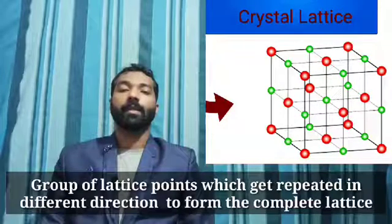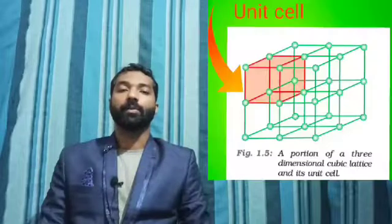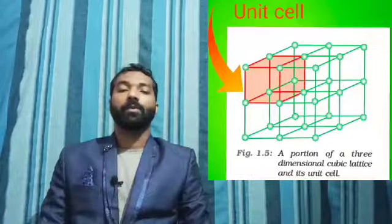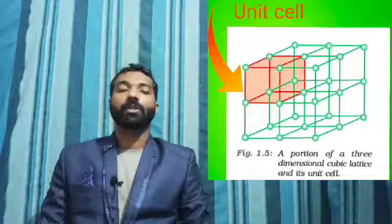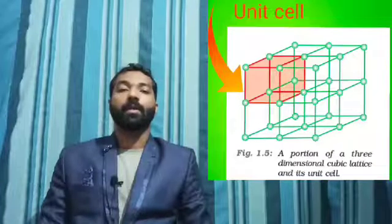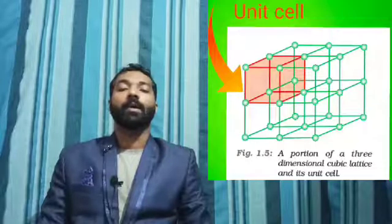Now let's look at the characteristics of the crystal lattice. The smallest repeating portion of the crystal lattice is known as the unit cell. When unit cells repeat and stack together, they form the complete crystal lattice — similar to how bricks form a wall.